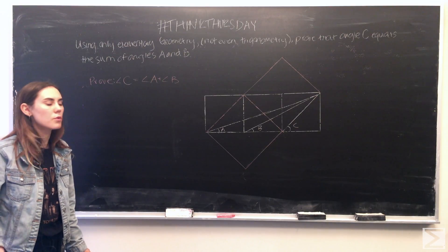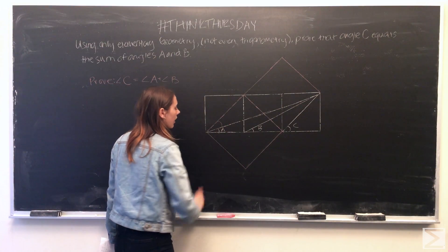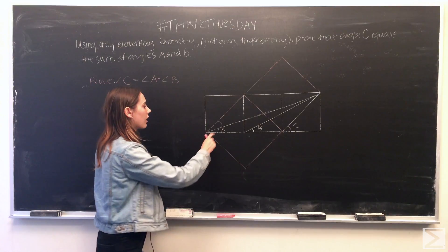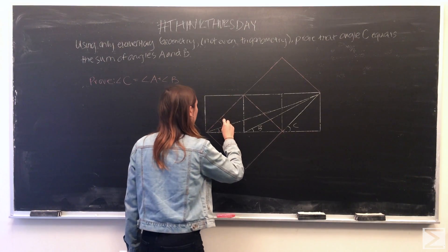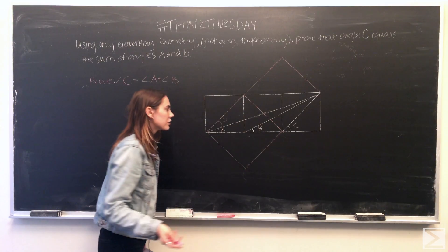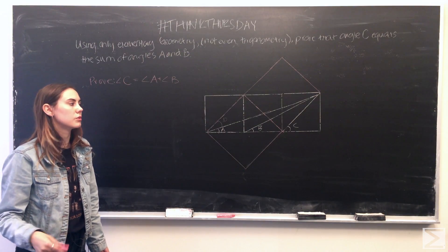And what we can prove actually is that if we take into account this angle here, the angle between angle A and then the extension of this big square, if we call it angle D, what we actually can see is that angles A plus D is actually equal to angle C.